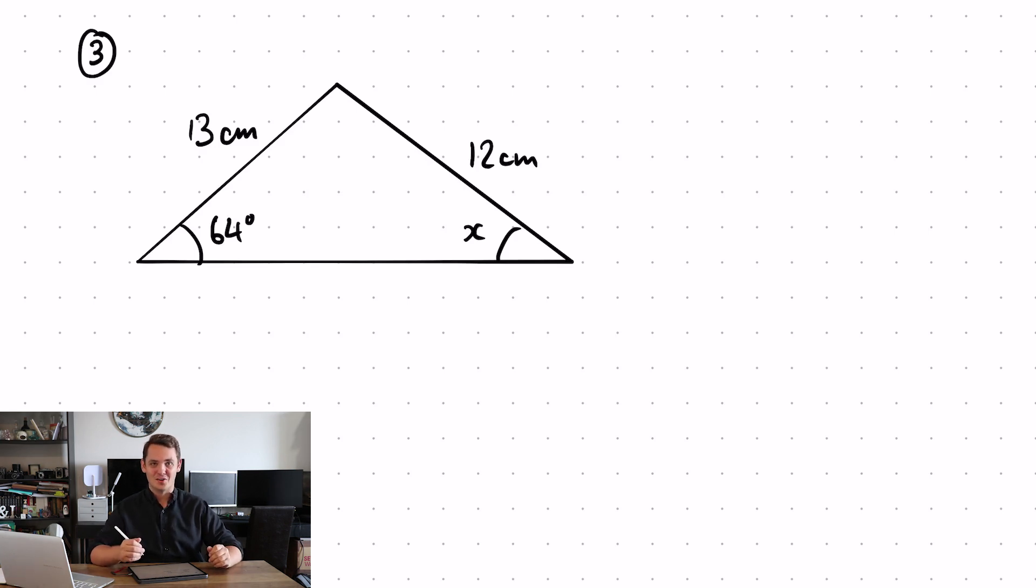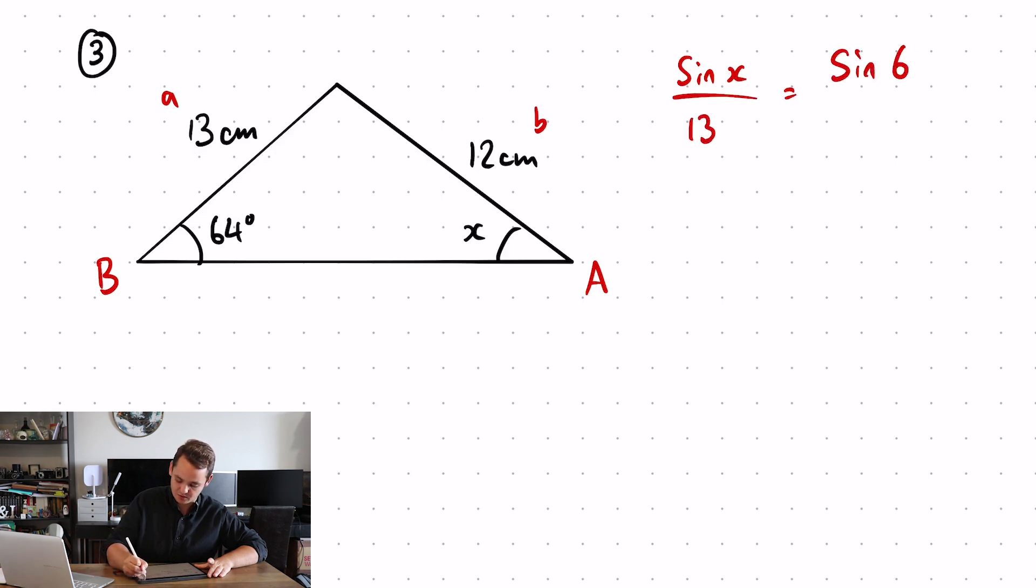Okay, hopefully you've had a good go at this. So let's label up our diagram. Capital A, lowercase a. Capital B, lowercase b. Remember, angles are capitals, sides are lowercase. Now use your formula. Sine A over a. Sine x over 13 is equal to sine 64 over 12.